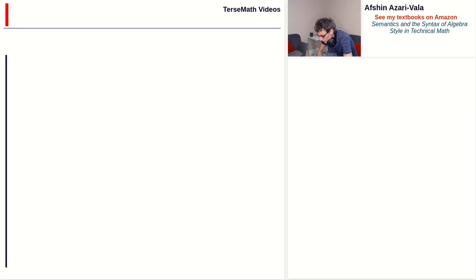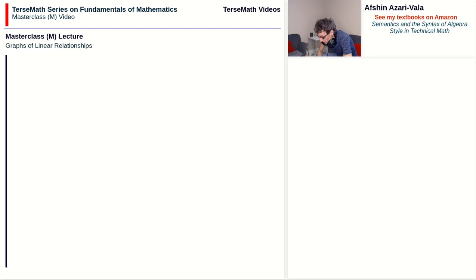Hello everyone, and welcome to the next video on the graphs of the basic relationships. In this video I will limit the talk to the kinds of relationships whose graphs are straight lines. The word linear comes from analogy with the geometric application of such equations, and because the graphs of such equations appear as straight lines, we refer to them as linear relationships.